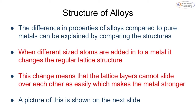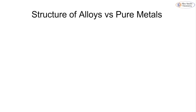The difference in properties between alloys and pure metals can be understood by looking at their structure. When we have different-sized atoms added into a metal, it changes the regular lattice structure. Metals normally have atoms arranged in nice rows and columns in a regular lattice, but adding a different atom throws that off balance. This change means that the layers in the lattice can no longer easily slide over each other, and it's that sliding which otherwise makes the metal brittle.